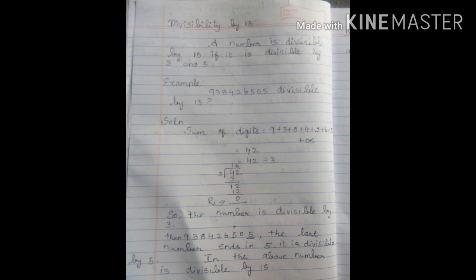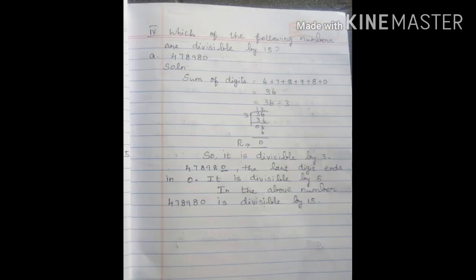Next, check divisibility by 5. The rule: the last digit must end in 0 or 5. The last digit is 5, so it is divisible by 5. Therefore, the above number is divisible by 15.